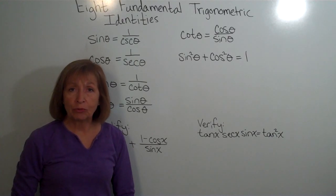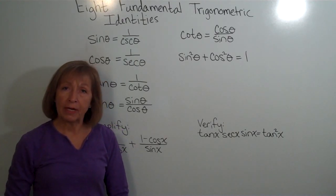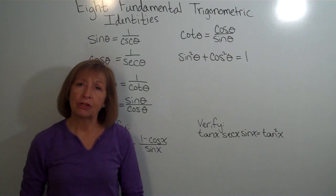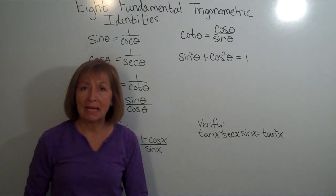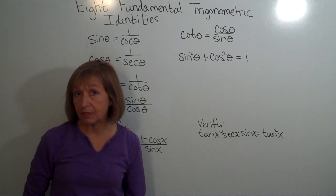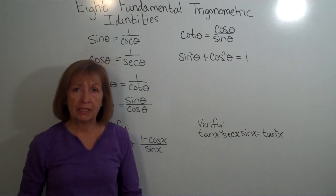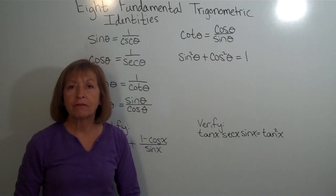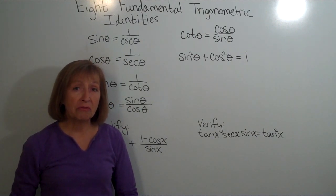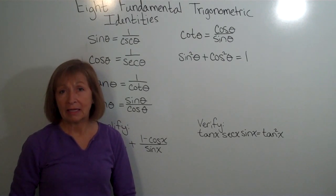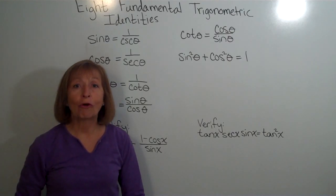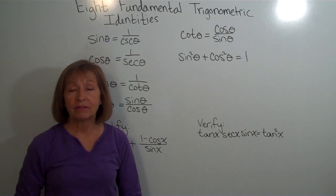Remember in algebra, if I have a conditional equation, it's true on the condition that I have the values of x that make the equation true. Those equations are true for some values in their domain, and our job is to find the values of the variables that make the equation true. If I have an impossible equation, there are no values in the domain that make it true. But if I have an identity, that means the equation is true for all values of the domain.